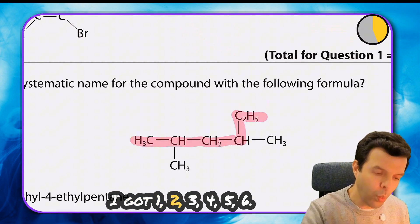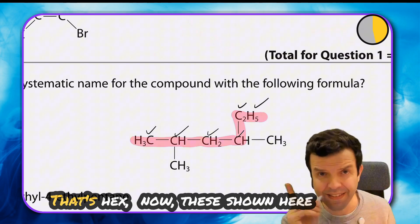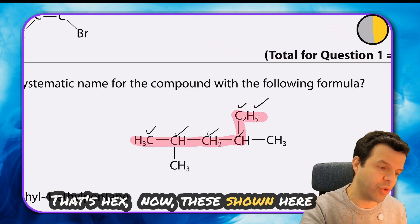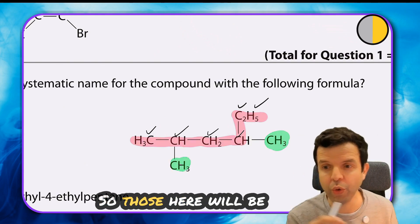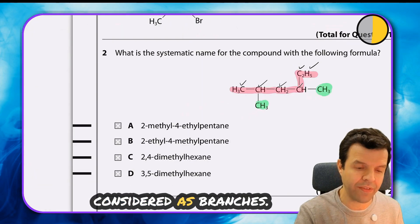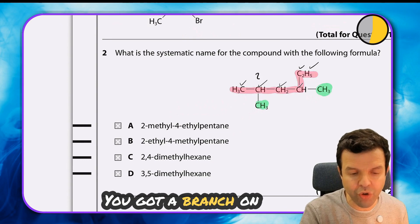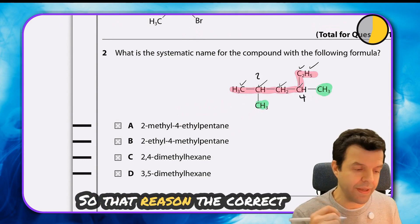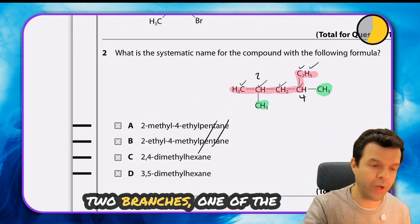These shown here in green are branches. You got a branch on the second carbon and a branch on the fourth carbon. So the correct answer is hexane with two branches, one on the second and one on the fourth.